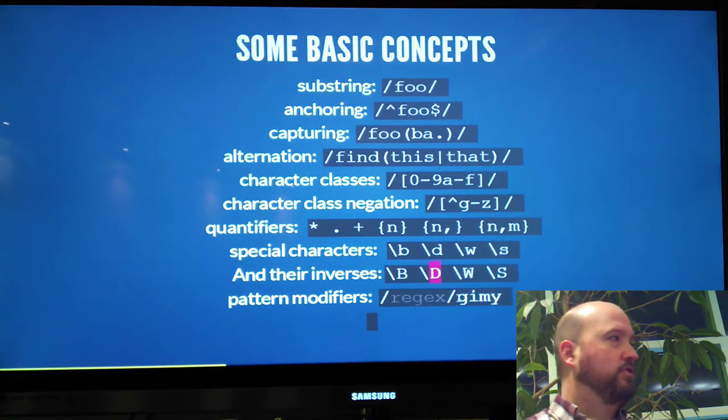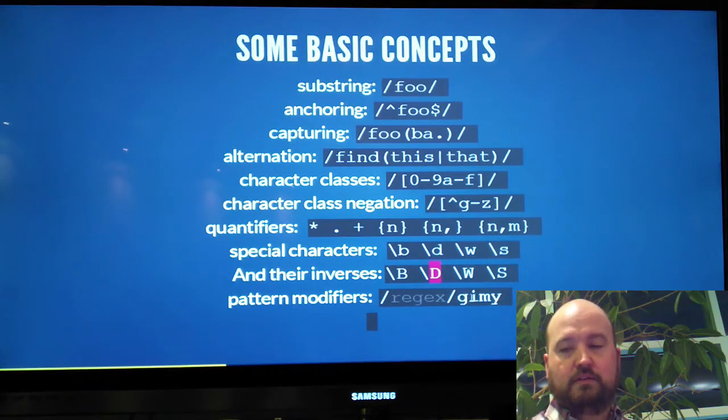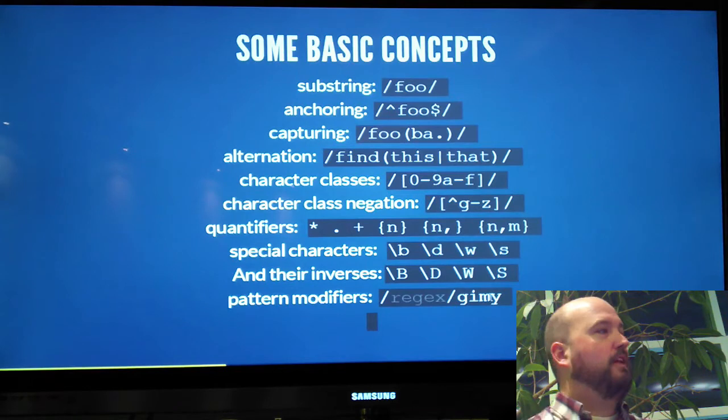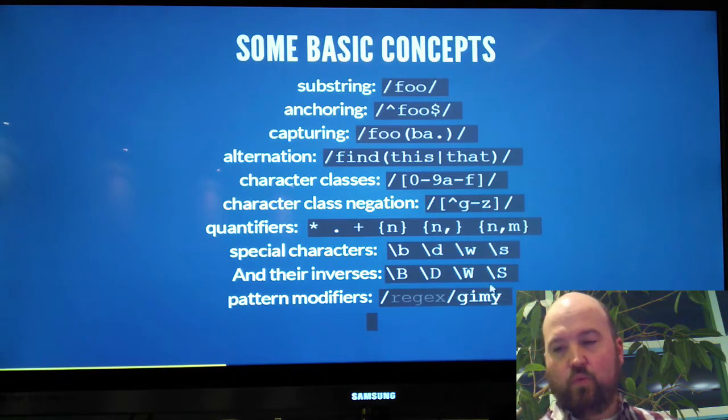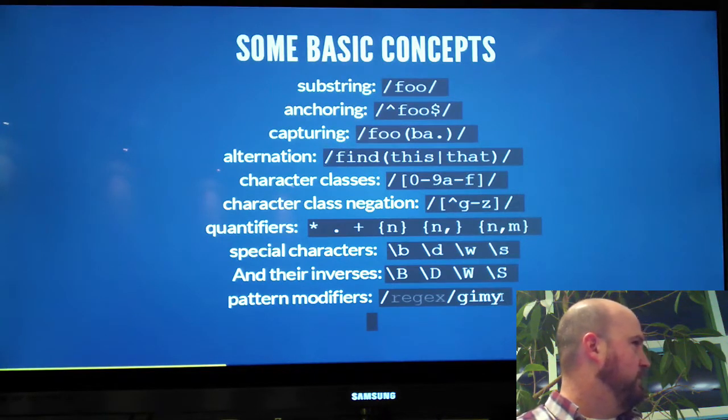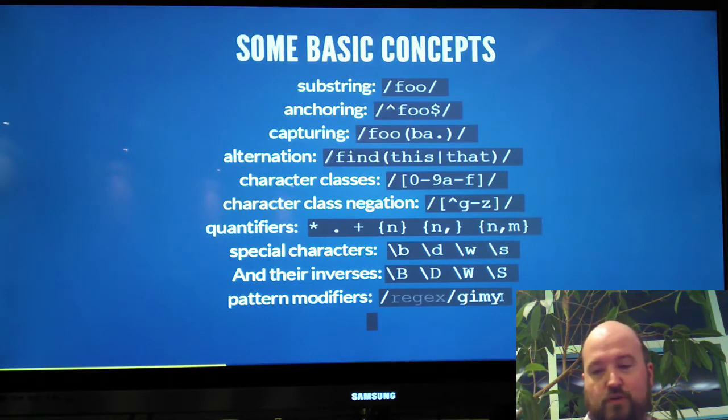The pattern modifiers. G is for global, so if you want to match more than just the first occurrence, say you want to capture or collect all of the matches. I is for case insensitive. You want multi-line matching, so if you've got a string with multiple lines separated by new line characters. And then Y, this is a sticky flag. I think maybe actually it's coming in ES6.